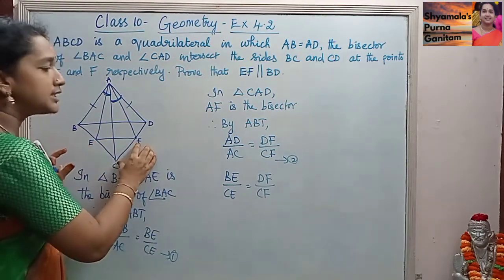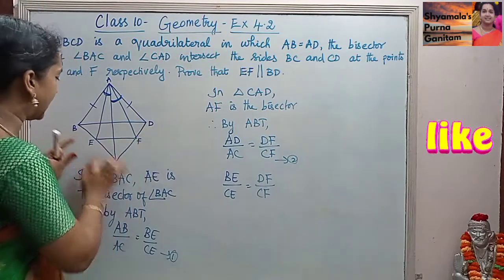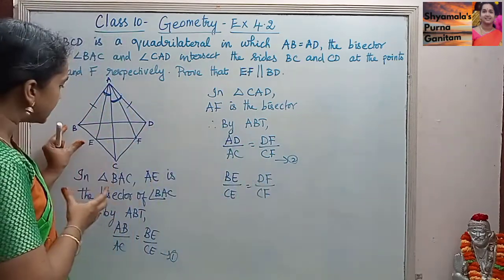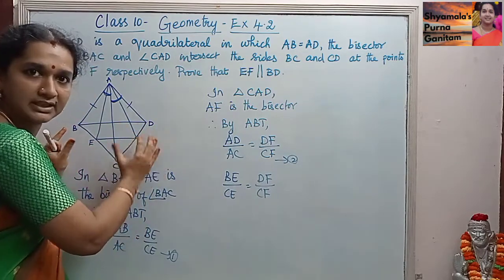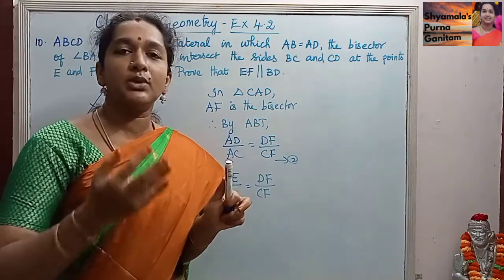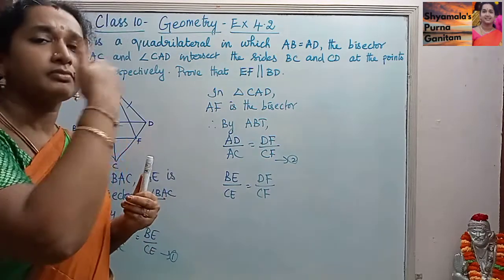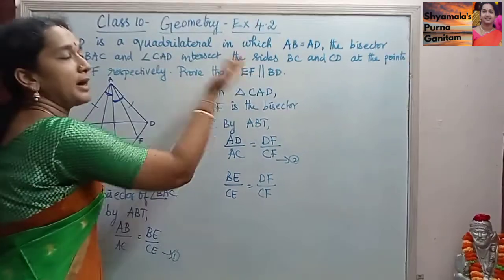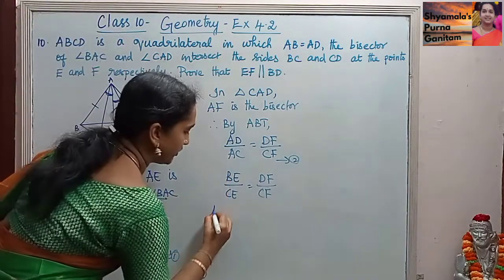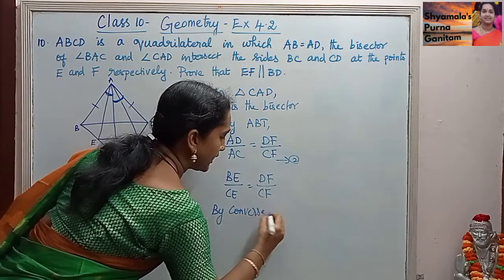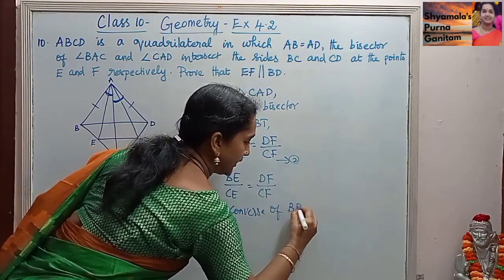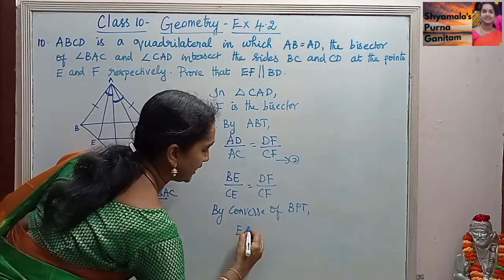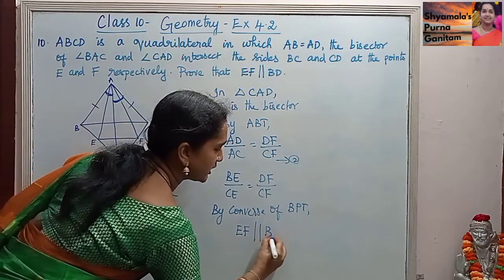When we take triangle BCD, it is clear that BE by CE is equal to DF by CF — that is, the sides are proportional. By the converse of the Basic Proportionality Theorem, when the sides are proportional, the other two sides are parallel. Therefore, EF is parallel to BD.